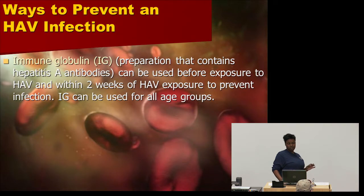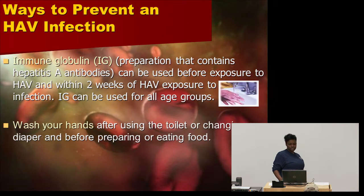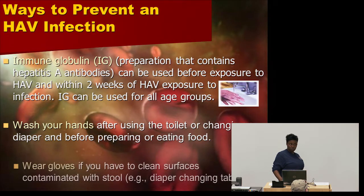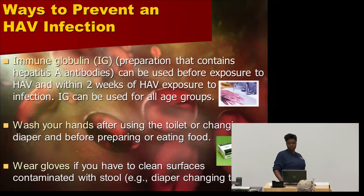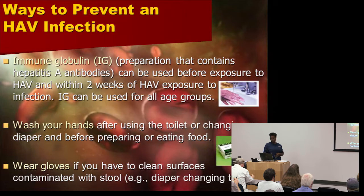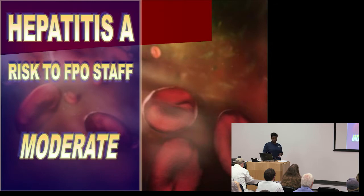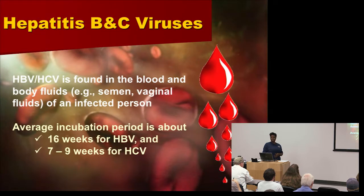Ways to prevent hepatitis A infection include immunoglobulin (Ig), a preparation containing hepatitis A antibodies that can be used before exposure or within two weeks of exposure. It can be used for all age groups. Be sure to wash your hands after using the toilet or changing a diaper, and before preparing or eating food. Always wear gloves when cleaning surfaces contaminated with stool, such as a diaper-changing table. The risk to FPO is moderate.